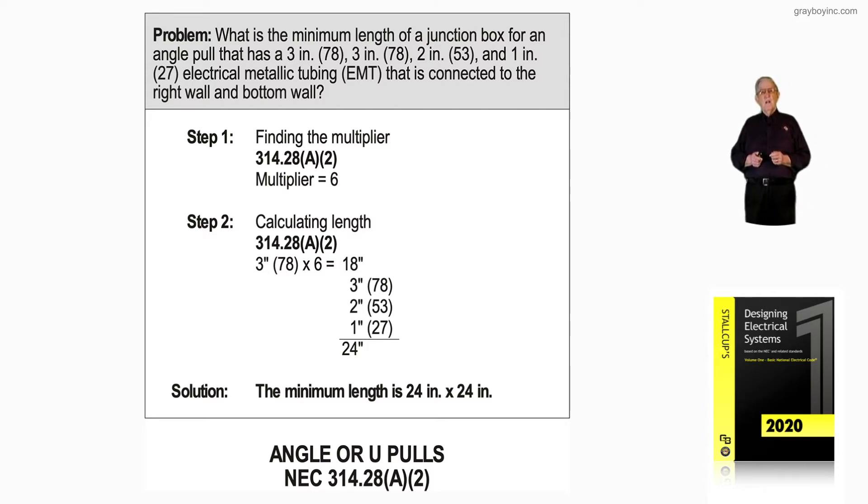We would have a multiplier of 6, because it's an angle or U-pull, not a straight pull. If it was a straight pull, remember, it would be 8.